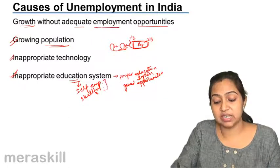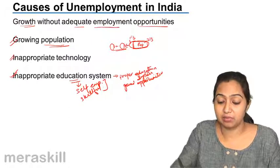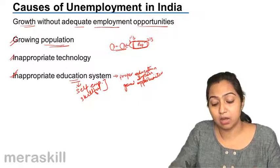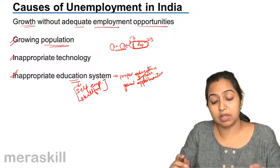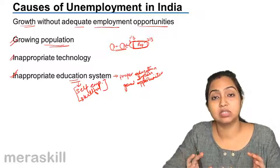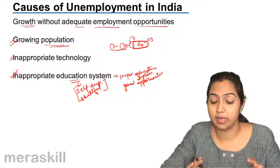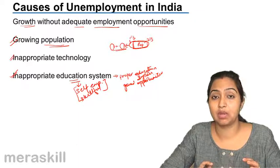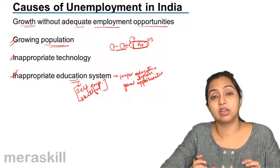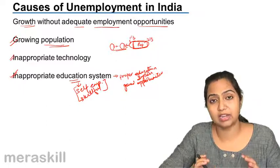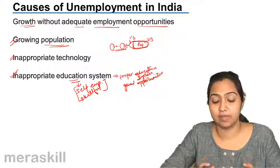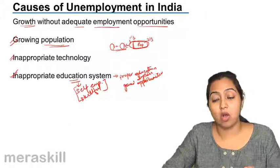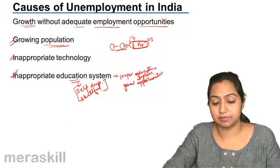Emphasis has been laid on making people literate, but efforts have not been made to develop them as good human resources. This is one of the reasons why unemployment persists — people are not qualified enough for the kinds of jobs that are available. These are some of the causes of unemployment in India.